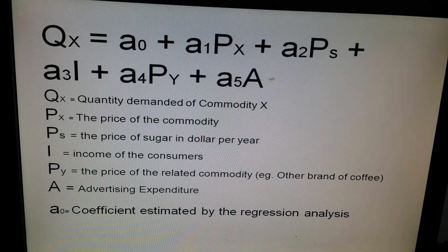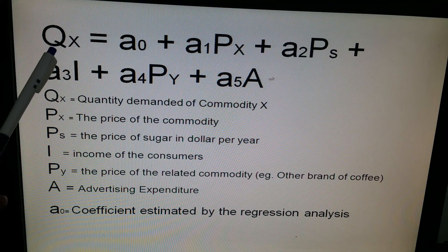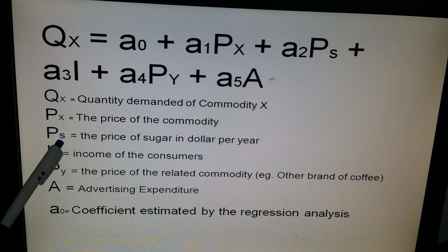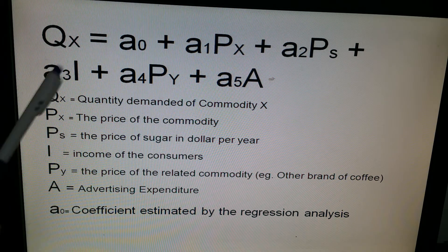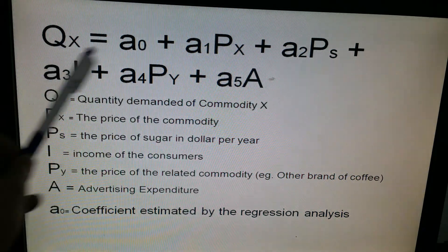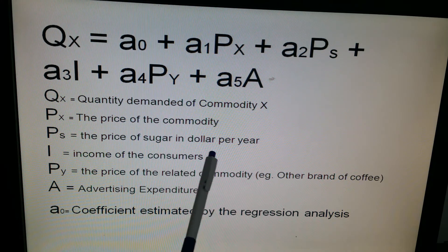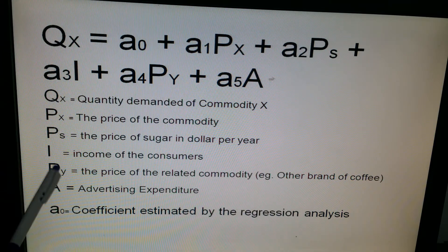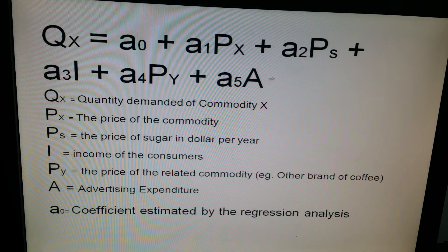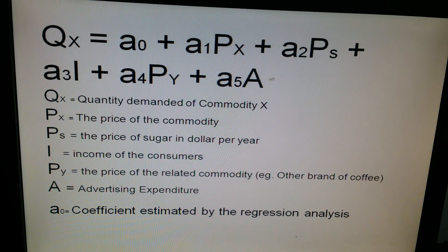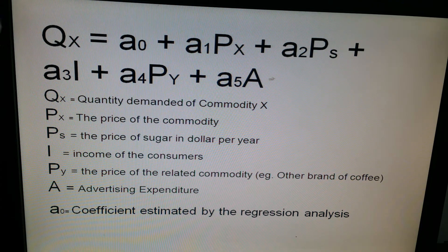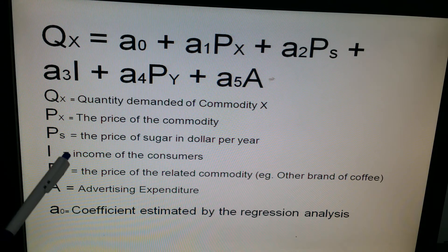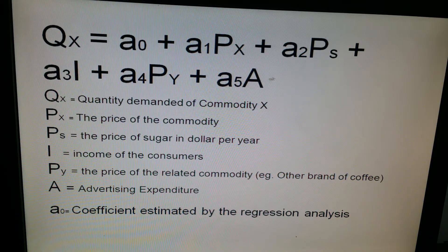So it is also dependent upon the price of another product, so that other product features here. It is also dependent upon the income of the consumers. Now this is the non-price determinant. So the quantity of X is dependent upon the income of the consumer. So PX represents price of the commodity itself, that's here.